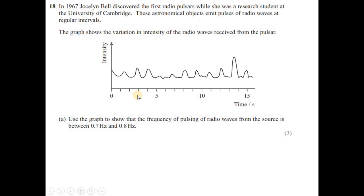Question number 18. In 1967, Jocelyn Bell discovered the first radio pulsars while she was a research student at the University of Cambridge. These astronomical objects emit pulse of radio waves at regular intervals. The graph shows the variation in intensity of the radio waves received from the pulsar. Use graph to show that the frequency of pulsing of radio waves from the source is between 0.7 to 0.8 Hertz.